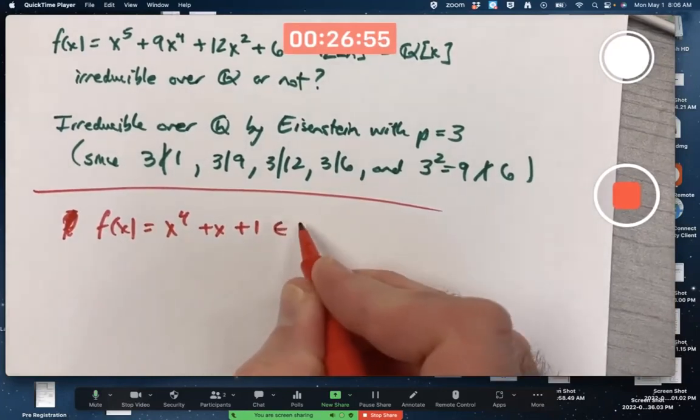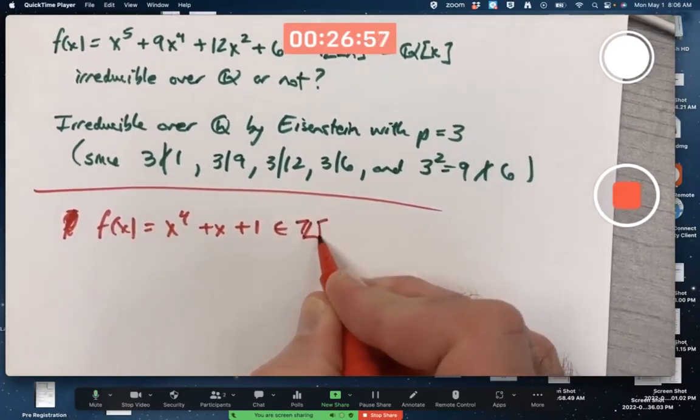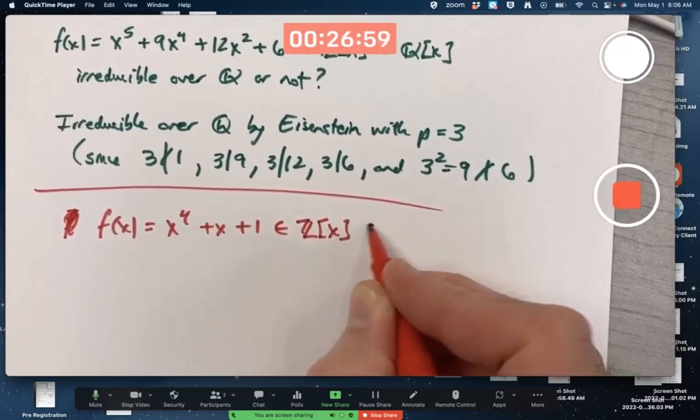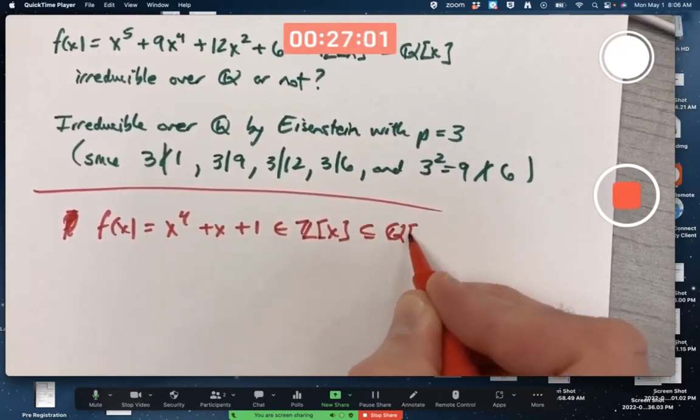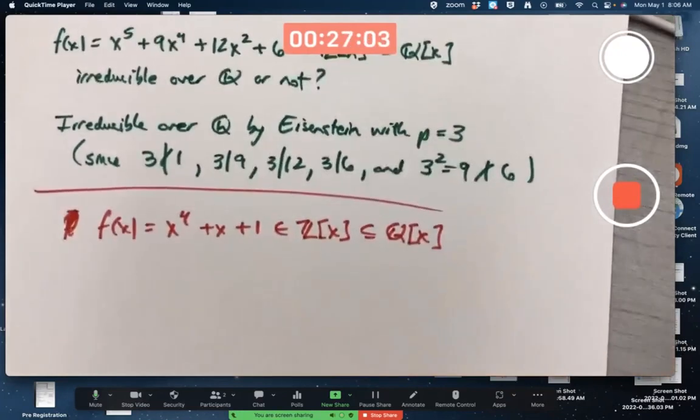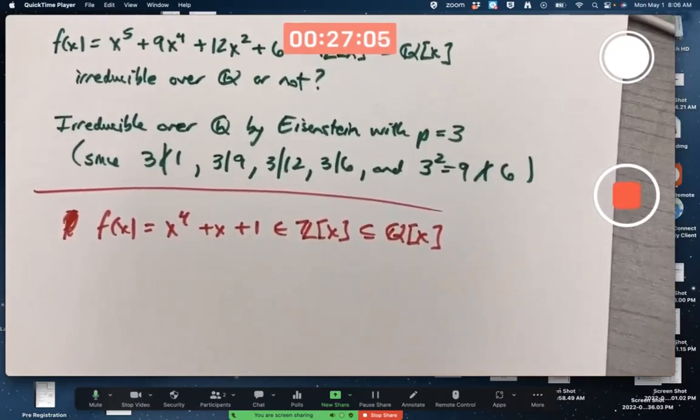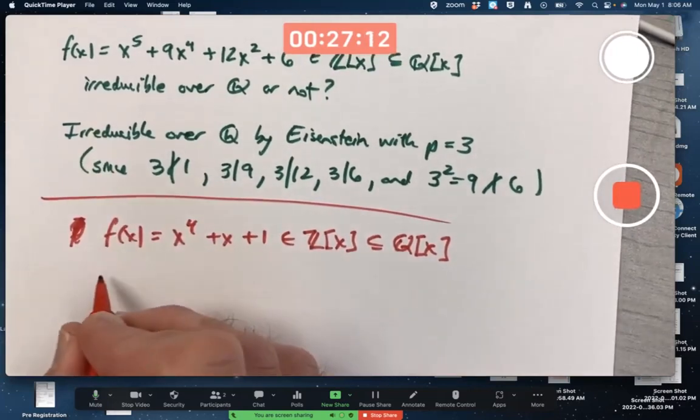For our second example, once again, this is a polynomial with integer coefficients, which means they're also rational coefficients. I'm trying to verify whether this is reducible or irreducible over the rationals. Once again, it's the same question as the previous one.